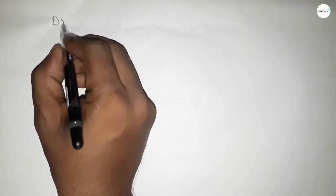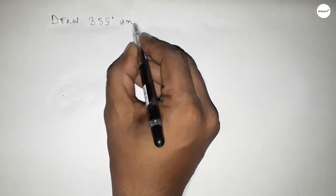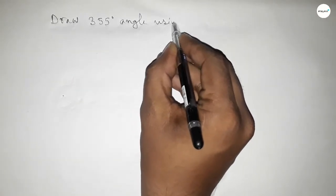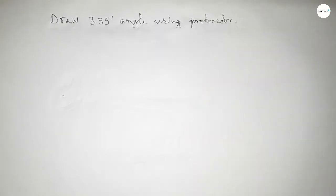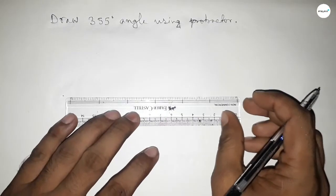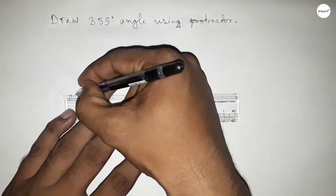Hi everyone, welcome to SSR classes. Today in this video we have to draw a 355 degree angle by using a protractor. So let's start the video. First of all, we have to draw here a straight line of any length.